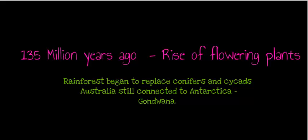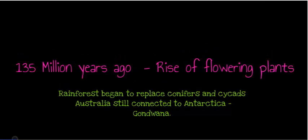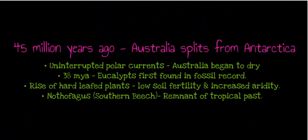Australia at this time was still connected to Antarctica and still formed part of Gondwana, which had not completely broken up. Then 45 million years ago, Australia split from Antarctica, and this set up uninterrupted polar currents circulating around Antarctica.